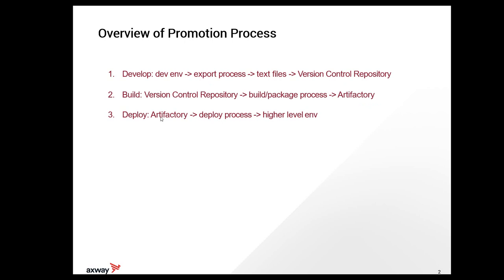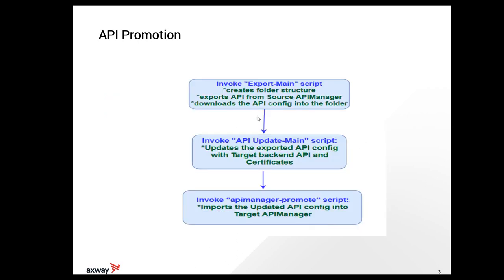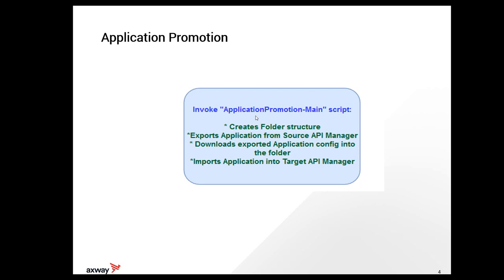In the deploy process, retrieve from Artifactory and import the configuration into the target API manager. In the API promotion, first the export script is invoked — this exports the API from the source API manager and saves it into a folder. The API update script then updates the downloaded API config with backend API and certificates for the target environment. For importing the API into the target API manager, the API manager promote script is used. The application promotion script is invoked to export the application from the source API manager and import it into the target API manager.